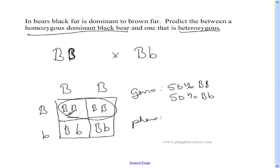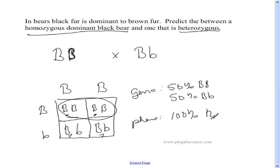For phenotype — this one is going to be black, because black is our dominant color. Black, black, black, black — all four boxes, four out of four, 100% of them are going to be black. And this is our completed answer: Punnett square, genotype, and phenotype.